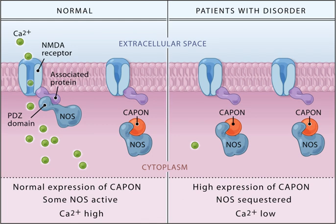Target neurons, muscle cells, or gland cells receive these signals. Neurotransmitters are released from synaptic vesicles in synapses into the synaptic cleft, where they are received by neurotransmitter receptors on the target cells.